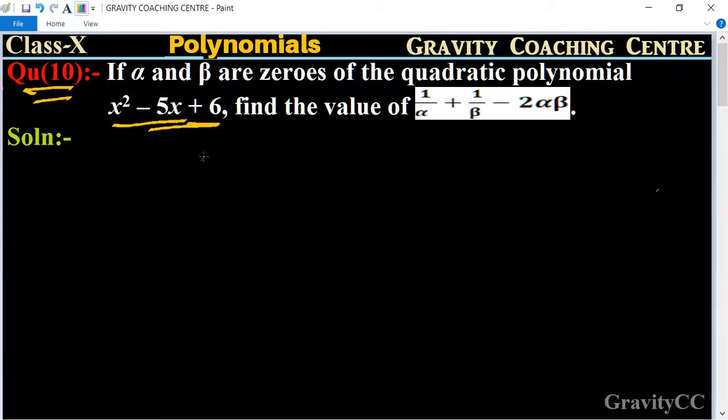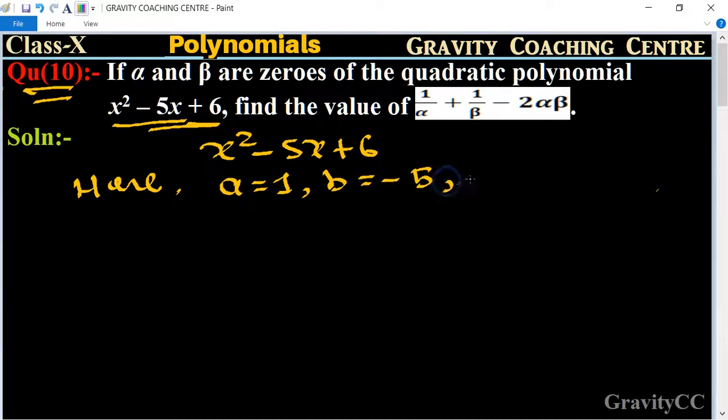First of all, we write the quadratic polynomial x² - 5x + 6. Here, a = 1, b = -5, and c = 6.